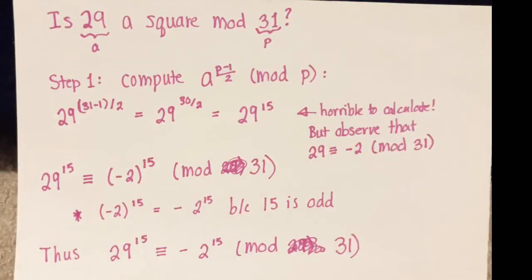Here's one where we can be kind of tricky about what we're doing. We want to know if 29 is a square mod 31. Is 29 a quadratic residue mod 31? Step 1 is to compute a to the p minus 1 over 2 mod p, but we don't want to go ahead and compute 29 to the 15 and then reduce that mod p, because that would be a very large number. We observe that 29 is congruent to negative 2 mod 31.